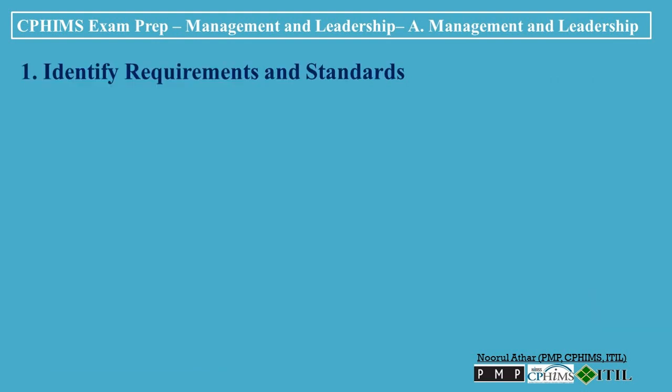1. Identify requirements and standards. Regulatory compliance: identify legal and regulatory requirements that impact information and systems management, such as HIPAA for healthcare organizations, GDPR for data protection, or specific industry standards like ISO/IEC 27001 for information security management. Organizational goals: align with organizational goals and strategies to ensure that policies and procedures support the overall mission and operational needs.